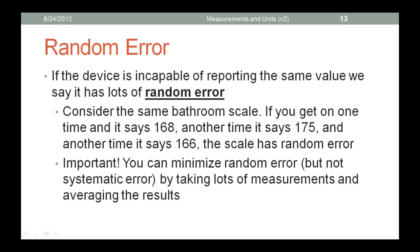And this is why in science you often take more than one measurement and then you average them. Consider the same bathroom scale. If you get on one time and it says 168, another time it says 175, and another time it says 166, the scale has random error. Important! You can minimize random error, but not systematic error, by taking lots of measurements and averaging the result.